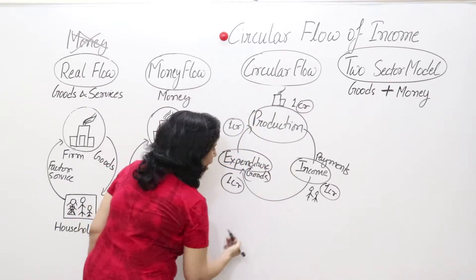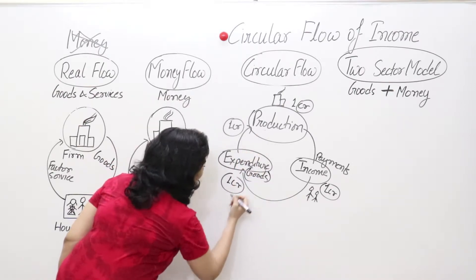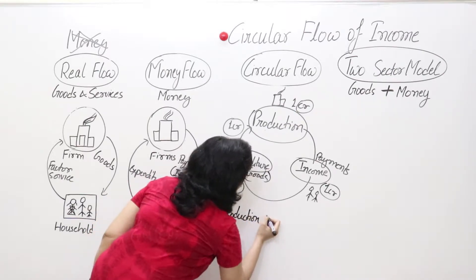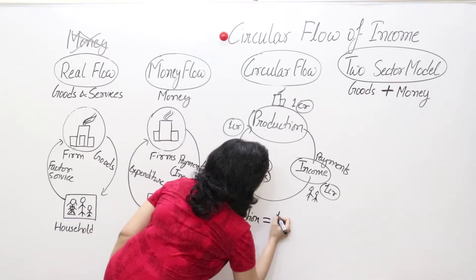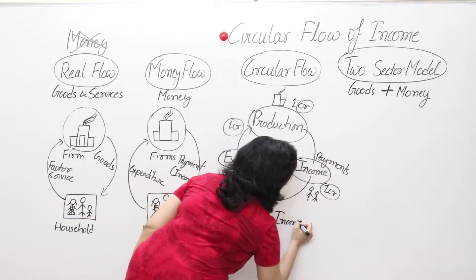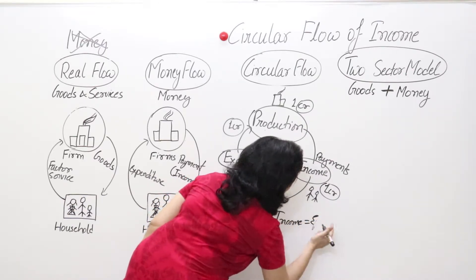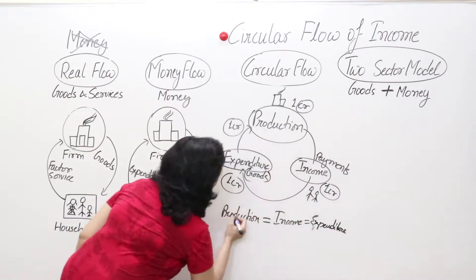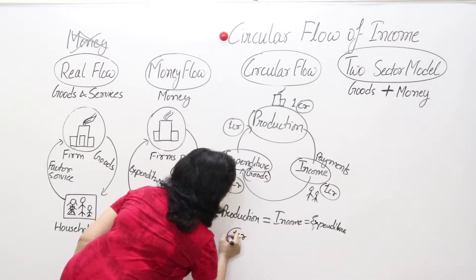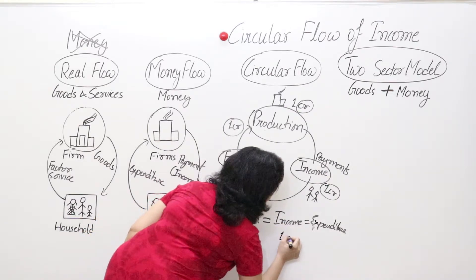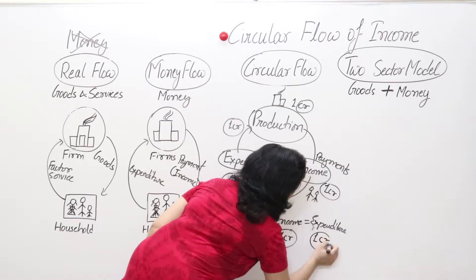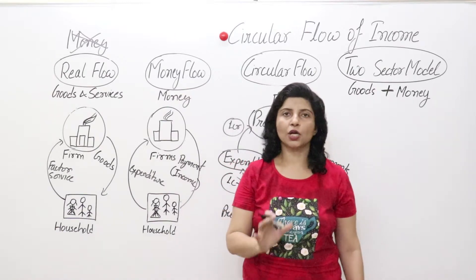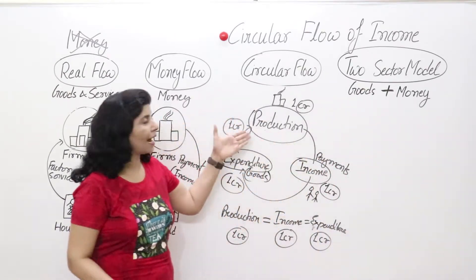Now, what is triple identity? Production is equal to income is equal to expenditure. Production was 1 crore, income is 1 crore, and expenditure is again 1 crore. So this is known as triple identity — all three phases are equal in value in the economy.